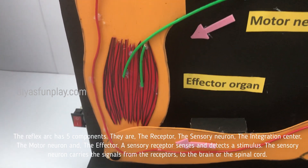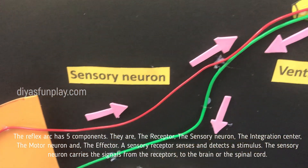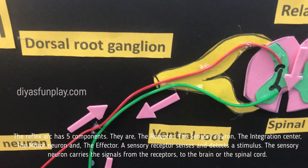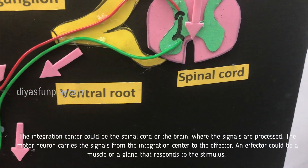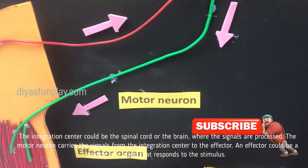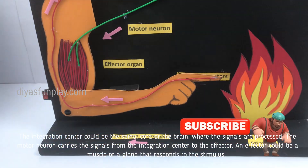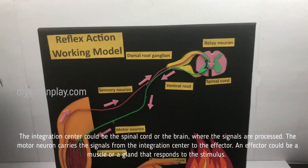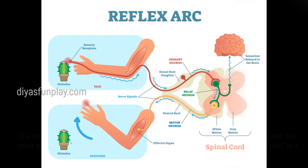The sensory receptor senses and detects a stimulus. The sensory neuron carries the signals from the receptors to the brain or the spinal cord. The integration center could be the spinal cord or the brain where the signals are processed. The motor neuron carries the signals from the integration center to the effector. An effector could be a muscle or a gland that responds to a stimulus.